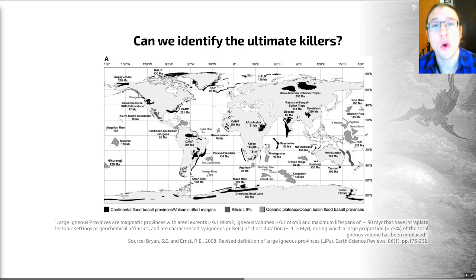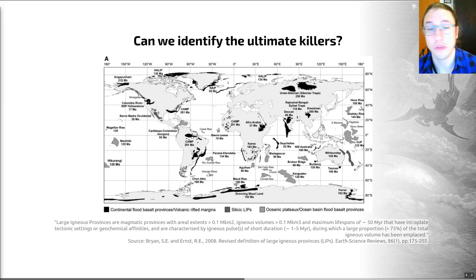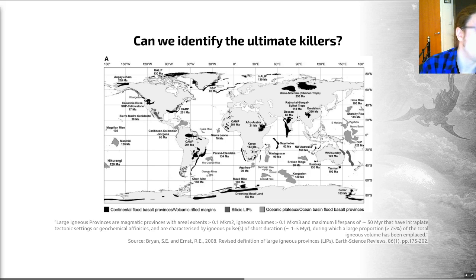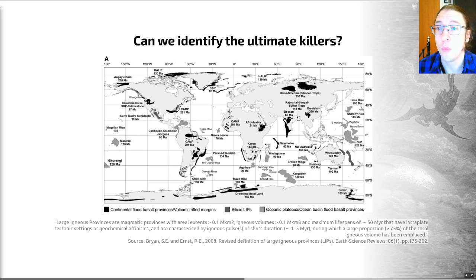It's increasingly widely thought that structures called large igneous provinces, and the processes and eruptions associated with those, may be a driver of many extinctions. A large igneous province is a magmatic province with aerial extents larger than 0.1 million kilometers squared, volumes above a certain amount, and lifespans of around 50 million years. Essentially, they are large igneous events — eruptive extrusions which occur at different times in the geological past.